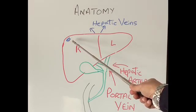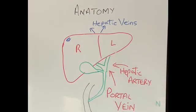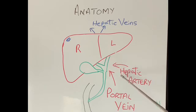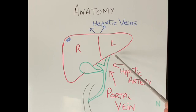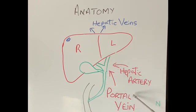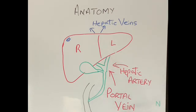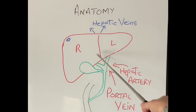The same thing happens with the blood supply to the liver. The liver is supplied by two main blood vessels: one is called the hepatic artery, which brings a smaller amount of blood into the liver, and one is called the portal vein, which brings the most amount of blood into the liver. All the food that we eat from the intestine comes into the liver via the portal vein. These vessels, when they come into the liver, divide into two branches.